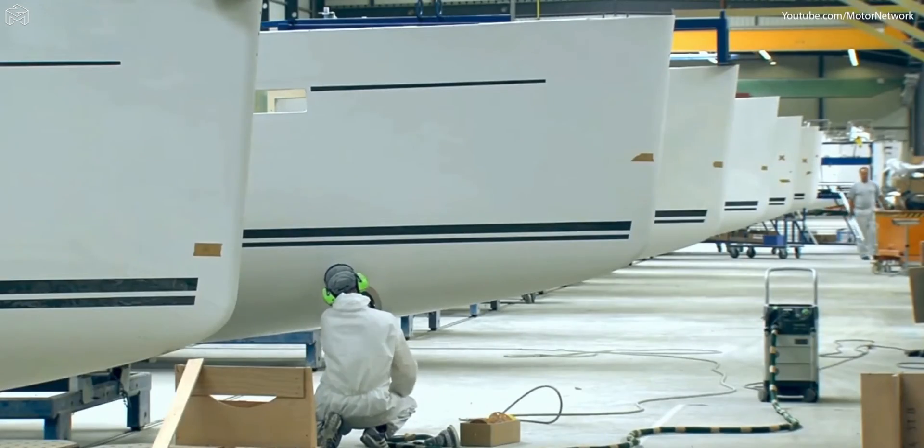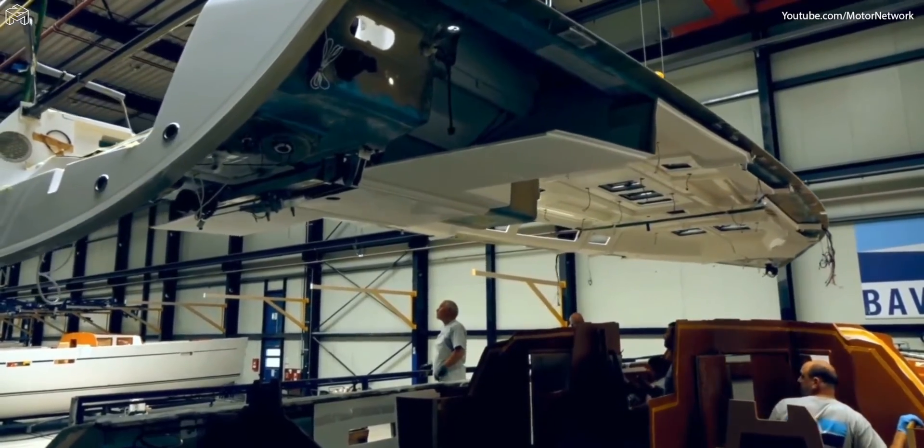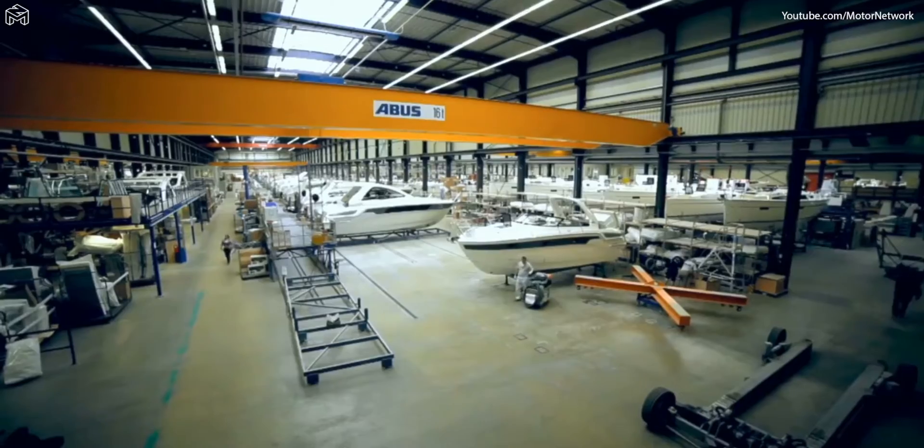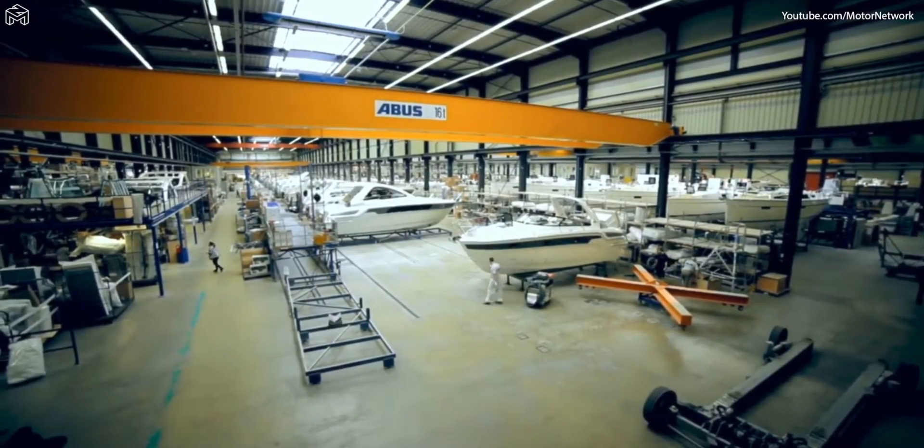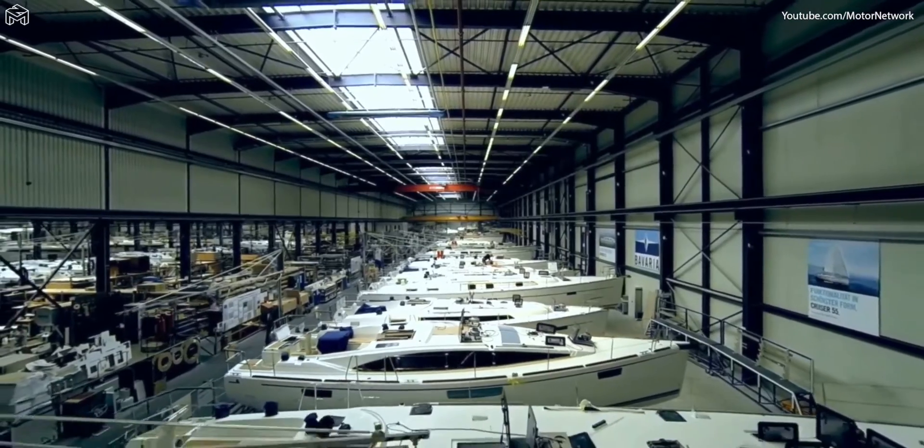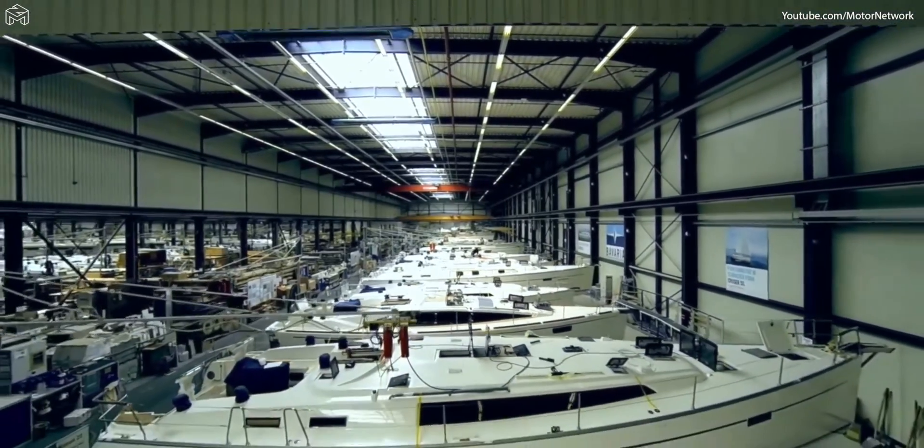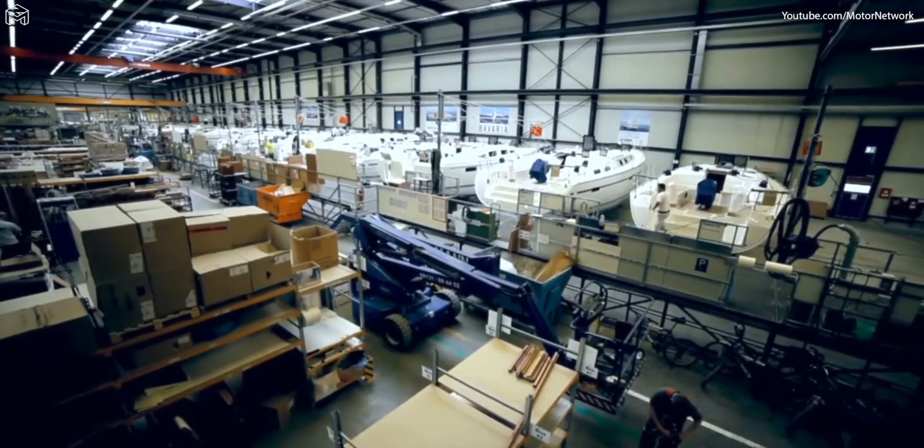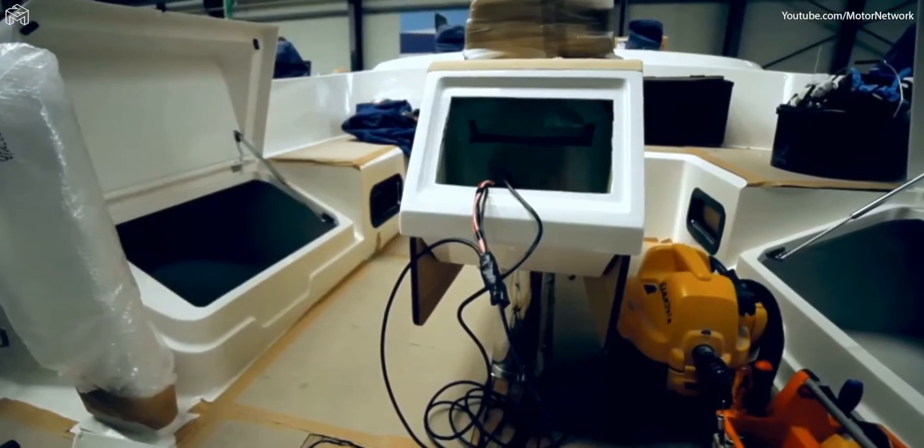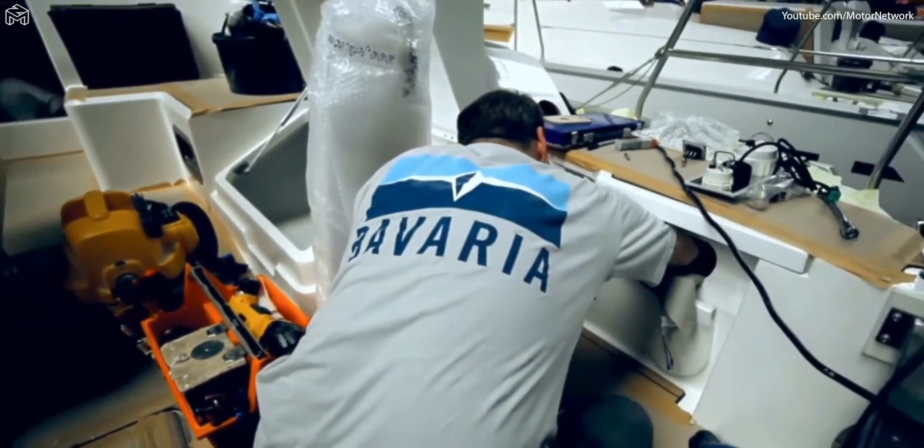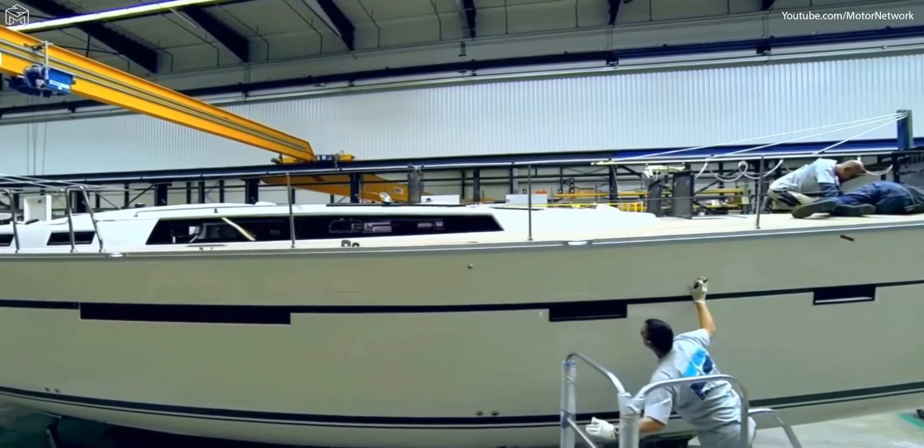At Bavaria, the yachts are assembled on a total of four production lines. In this way, a new sailing yacht is created section by section on the lines. At each stage of the process, a separate team of specialists are responsible for the work. Each team is in charge of their own quality control, which guarantees consistently high quality.